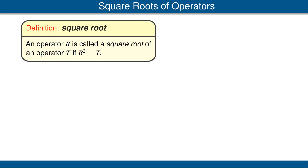If we have an operator T on V, then an operator R on V is called the square root of T if R² = T.